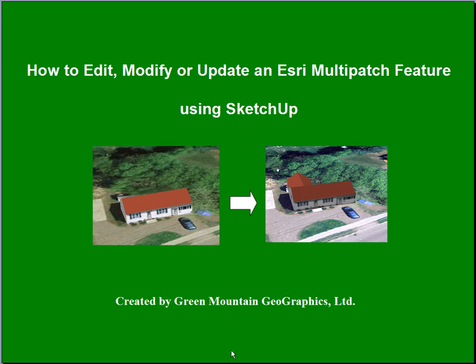In an earlier video, we outlined how to take a building model created in SketchUp version 8 and add it as a multi-patch feature for use in ArcScene. As time goes by, the landscape changes and buildings need to be modified. The question has been: how do we update multi-patch features? This video hopes to answer that question.